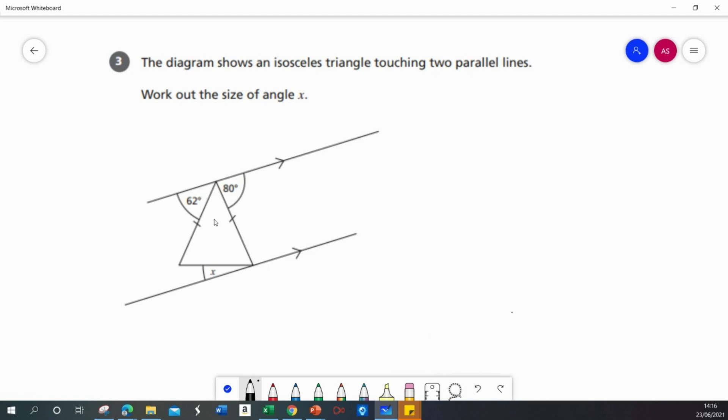Now the first calculation that I'm able to do is using angles on a straight line. I can see that this top of this triangle here forms a straight line with the two given angles. So I can find that angle, let's call it A, by using the fact that there is 180 degrees on a straight line. So if I subtract 62 and subtract 80 that tells me that angle A is 38 degrees.